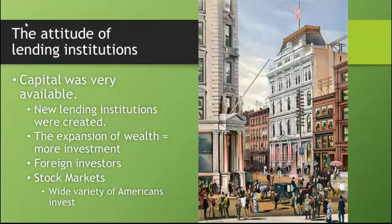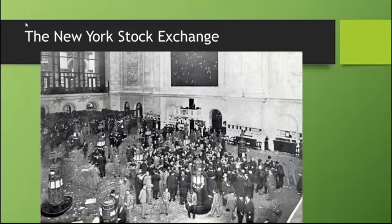During this time, capital was also very available. A lot of new lending institutions were created. The New York Stock Exchange basically became a center where many Americans could invest. The expansion of wealth in general led to more money being available, so people were willing to risk more capital in investment. Foreign countries like Great Britain also saw opportunity and invested in American industry, making it very easy to get capital to expand a business. Here's a picture of the New York Stock Exchange from 1906.